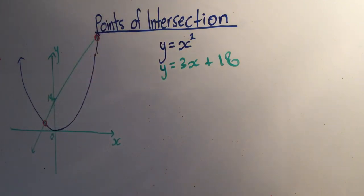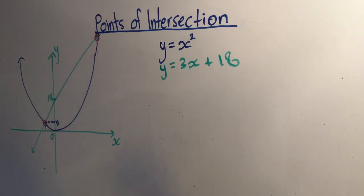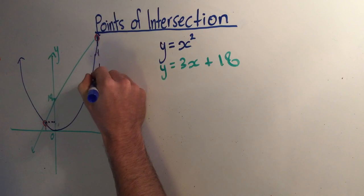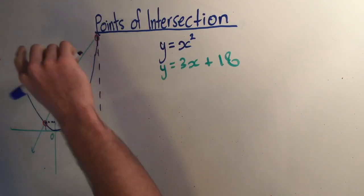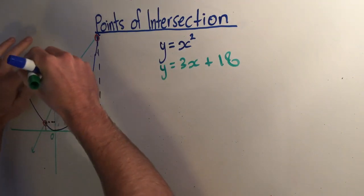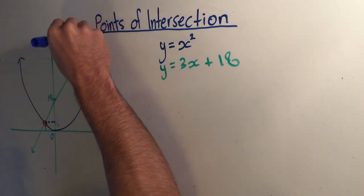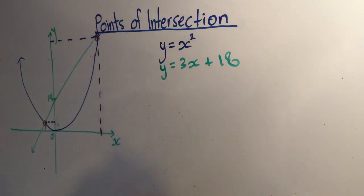Here and here. What that means is that at this point and at this point, the two lines or equations have the exact same coordinate. The y and x coordinate are exactly the same — they share the same x and y. Also at this lower point, if we go down to the x coordinate below here, that is the same for both of those lines. So the y and x for both points are the same for both of these lines.